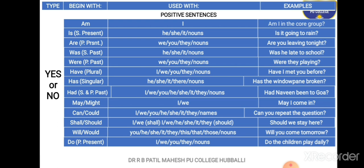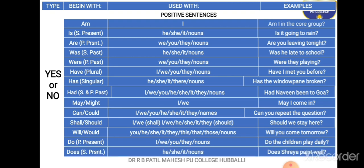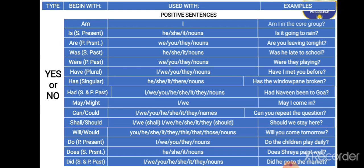The next word is 'do'. 'Do' should be used with the first person 'I' and plural forms in the present tense: we, you, they, and nouns. Example: 'Do the children play daily?' or 'Do they play daily?' Next is 'does'. 'Does' is used with singular subjects in the present form: he, she, it, and nouns. Examples: 'Does Shreya paint well?', 'Does she paint well?'